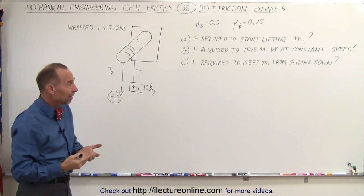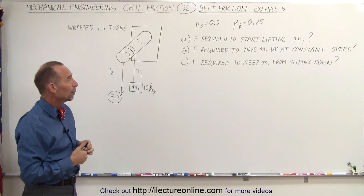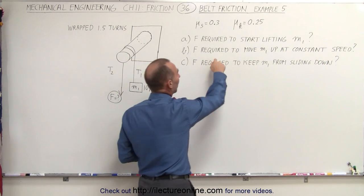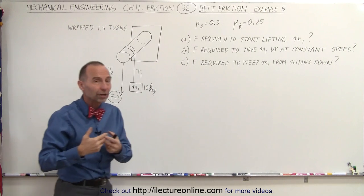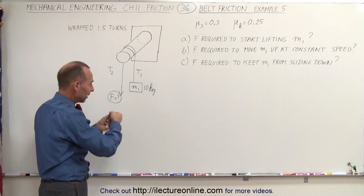Once we overcome the static coefficient of friction, or the static friction, then of course we have kinetic friction. Then what we need to do is find the force required to keep M1 moving up at a constant speed, which is going to be less than the force required to get it moving.